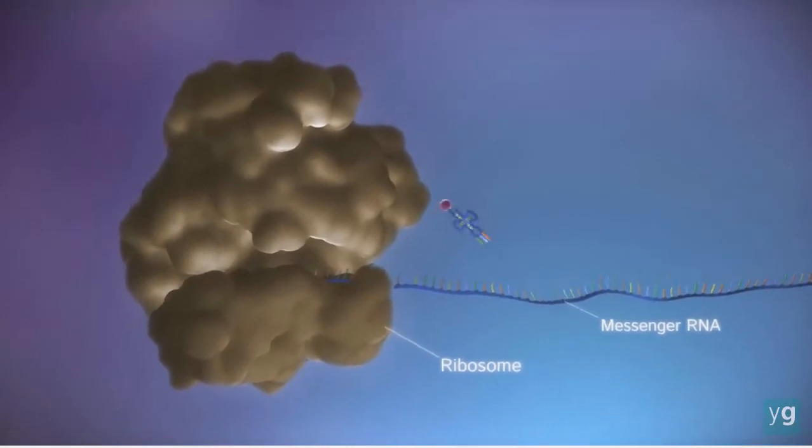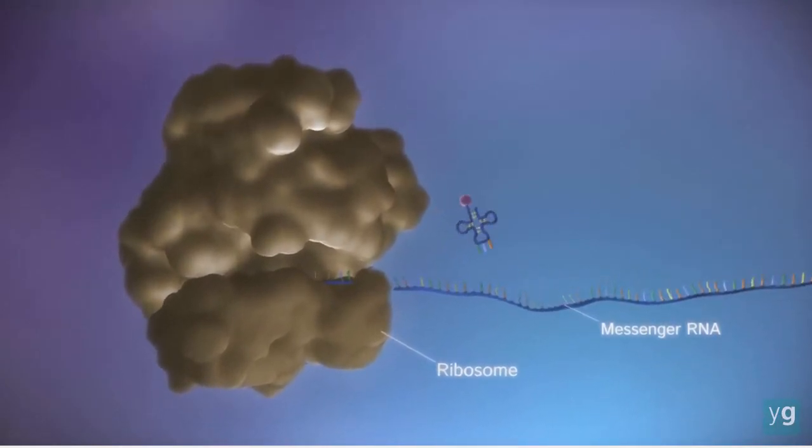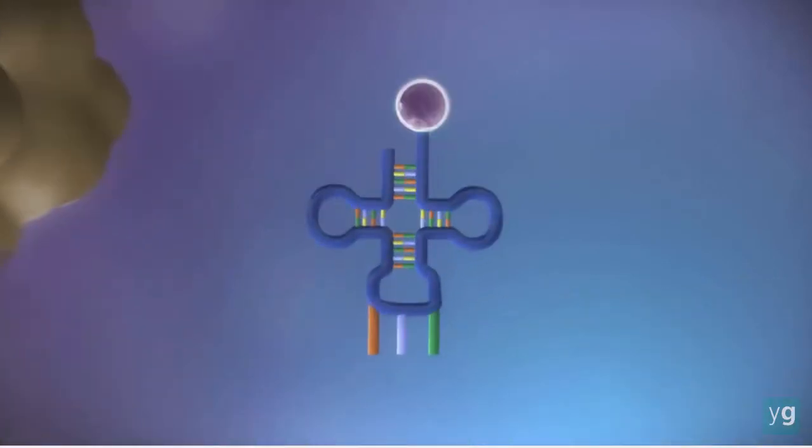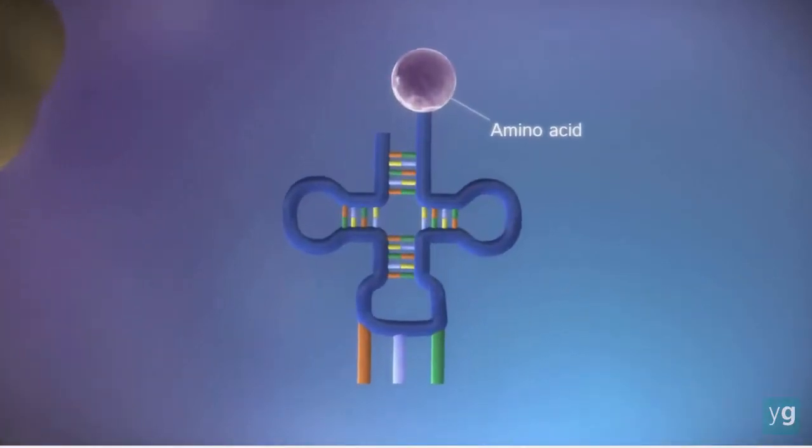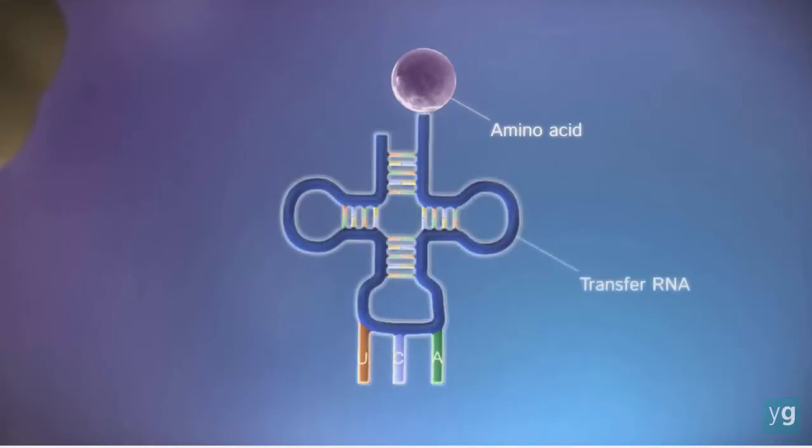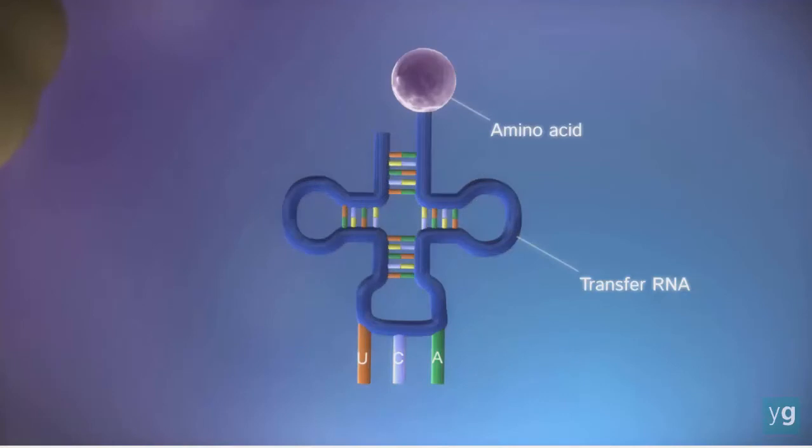The ribosome reads the code in the messenger RNA to produce a chain made up of amino acids. There are 20 different types of amino acids. Transfer RNA molecules carry the amino acids to the ribosome.